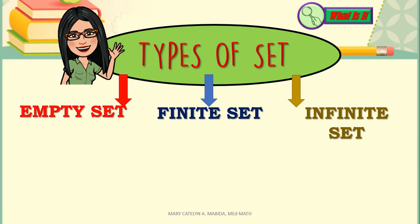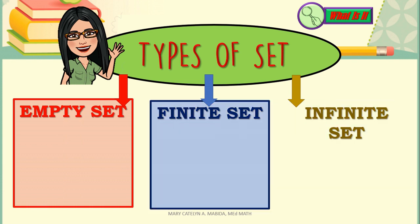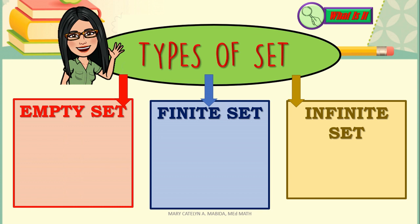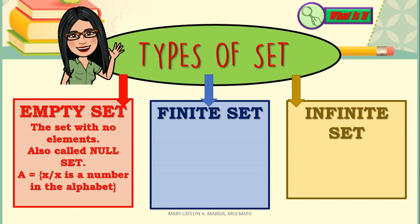Now let's talk about the types of sets according to cardinality. We have Empty Set, Finite Set, and Infinite Set. An Empty Set is the set with no elements — also called a Null Set. For example, set A where x such that x is a number in the alphabet. There are no numbers in the alphabet, so this set is an empty set, represented by empty parentheses or the Danish letter ∅, which represents a null set.